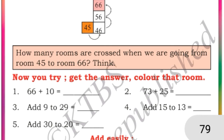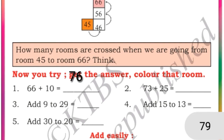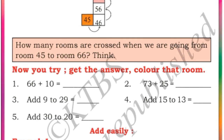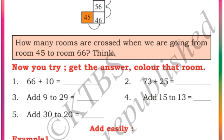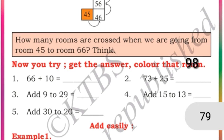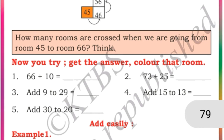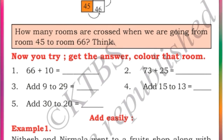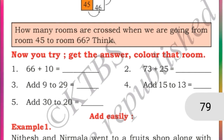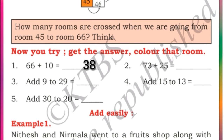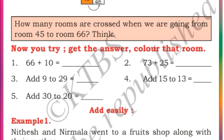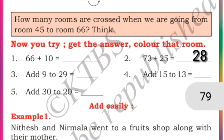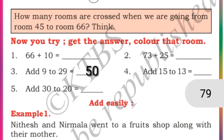Now let us try and get the answers. 66 plus 10 is 76. Second: 73 plus 25 — first count the ones place: 3 plus 5 is 8, then 7 plus 2 is 9, so the answer is 98. Third: add 9 to 29 — units place: 9 plus 9 is 18, write 8 and carry 1 to tens place, 2 plus 1 is 3, so the answer is 38. Fourth: add 15 to 13 — 5 plus 3 is 8, 1 plus 1 is 2, answer is 28. And 30 plus 20 is 50.